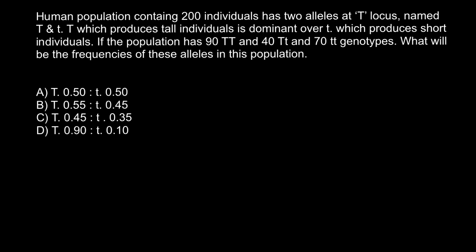If the population has 90 individuals that belong to the homozygous dominant genotype and 40 individuals that belong to the heterozygous genotype and 70 individuals that belong to the homozygous recessive genotype, what will be the frequencies of these alleles in this population?